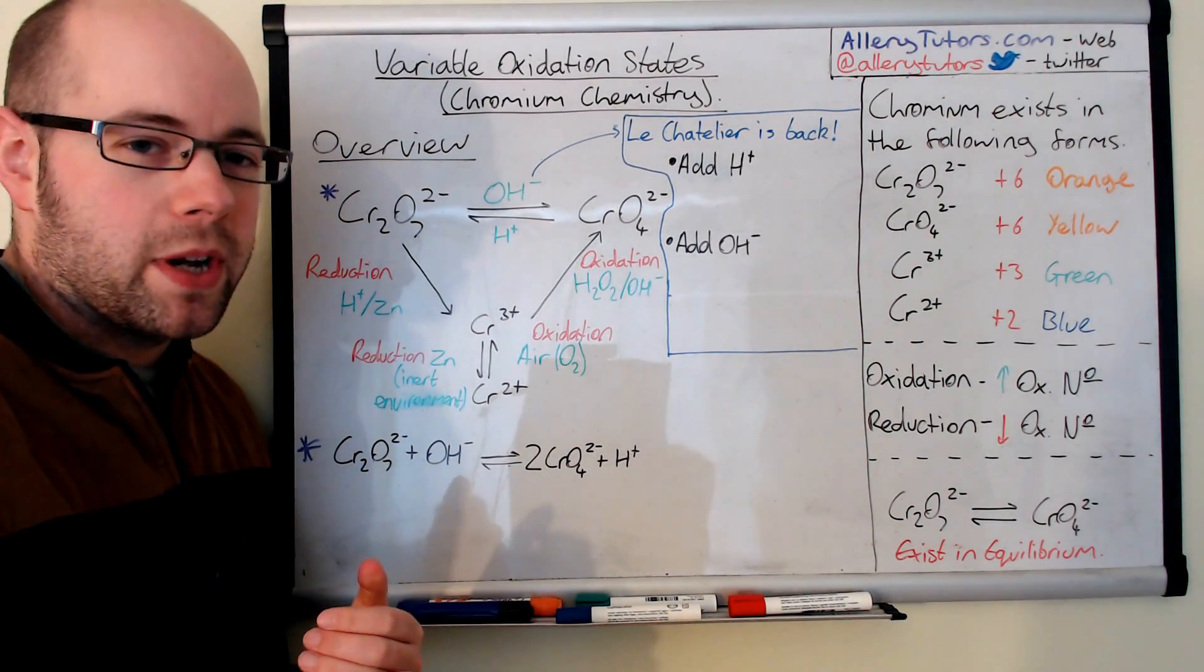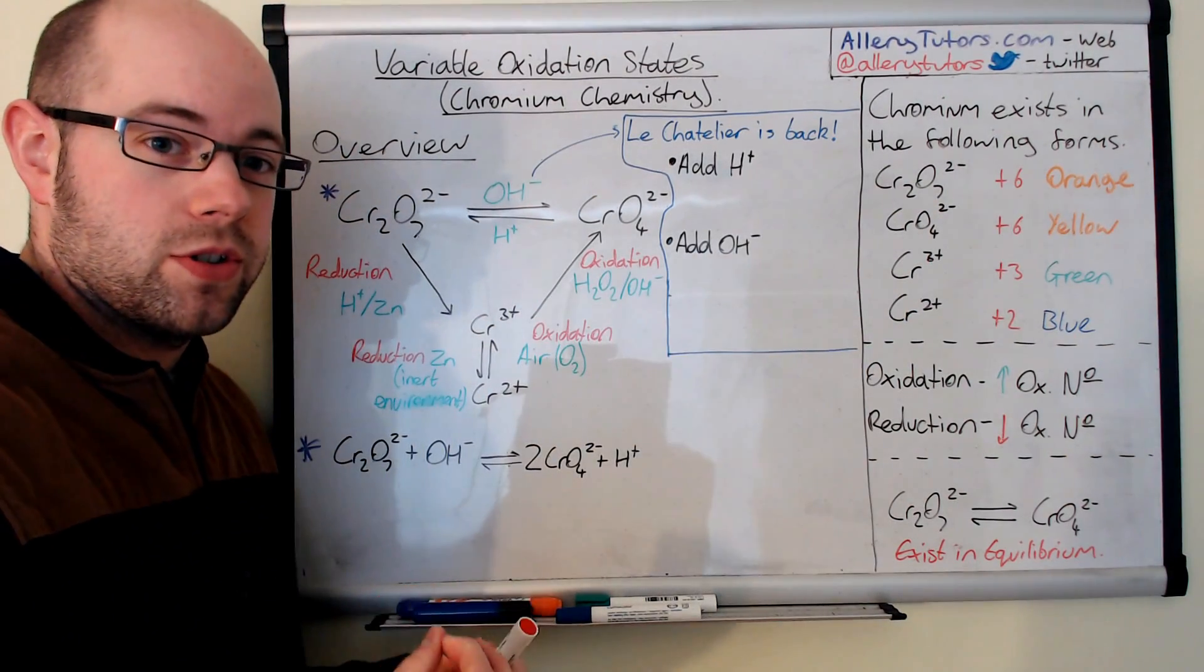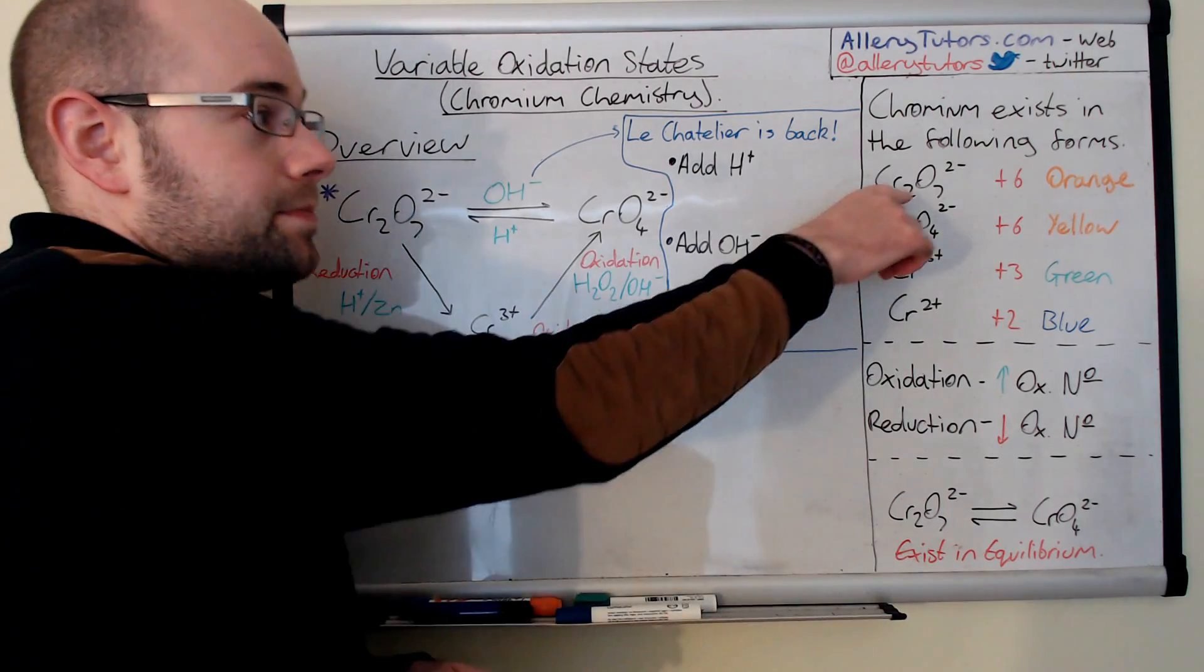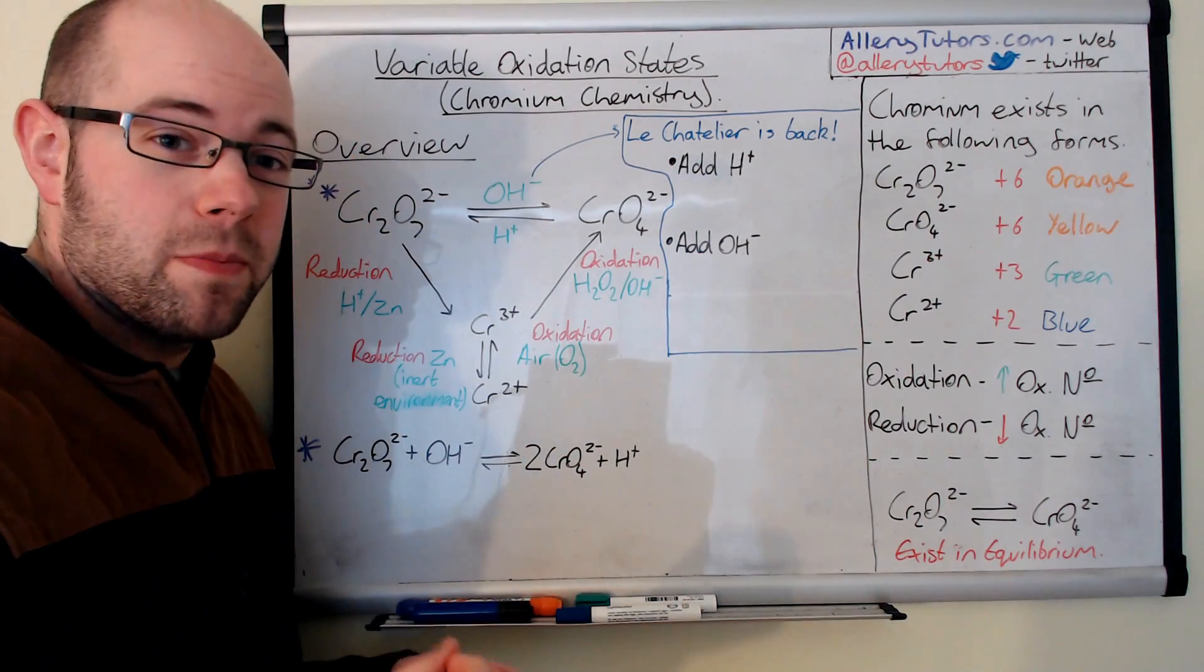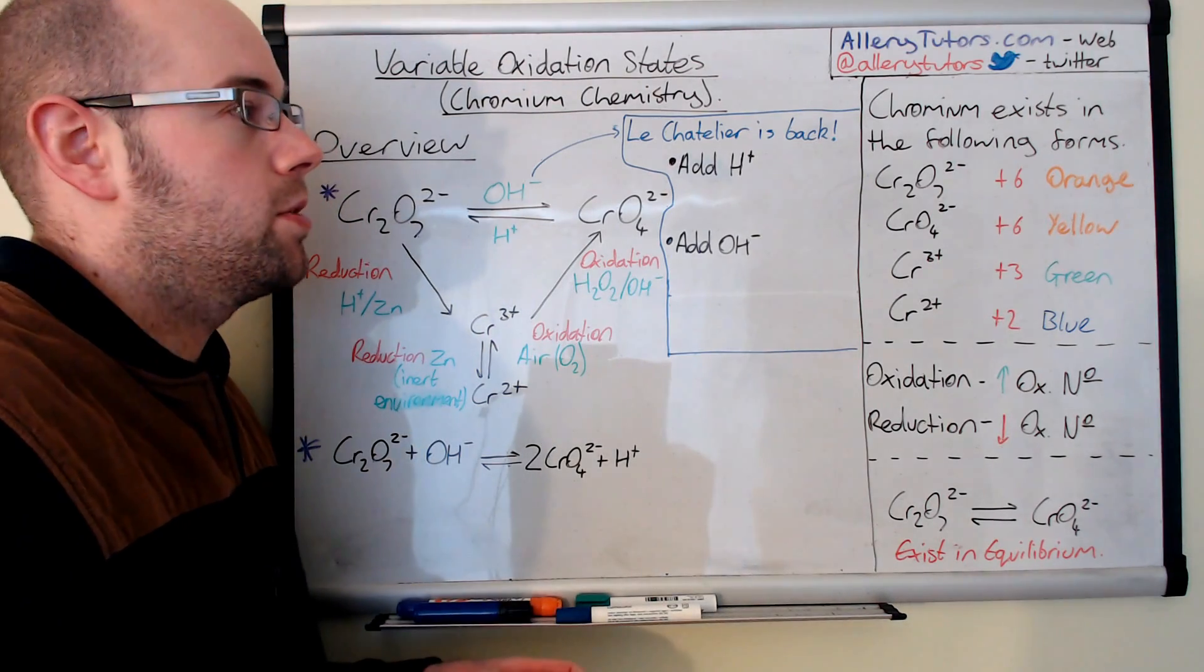Now if you can remember how we worked out the oxidation state is we look at the most electronegative element. In this case it's oxygen. Oxygen has an oxidation number of minus two. So we have seven of them. So that's minus 14 in total.